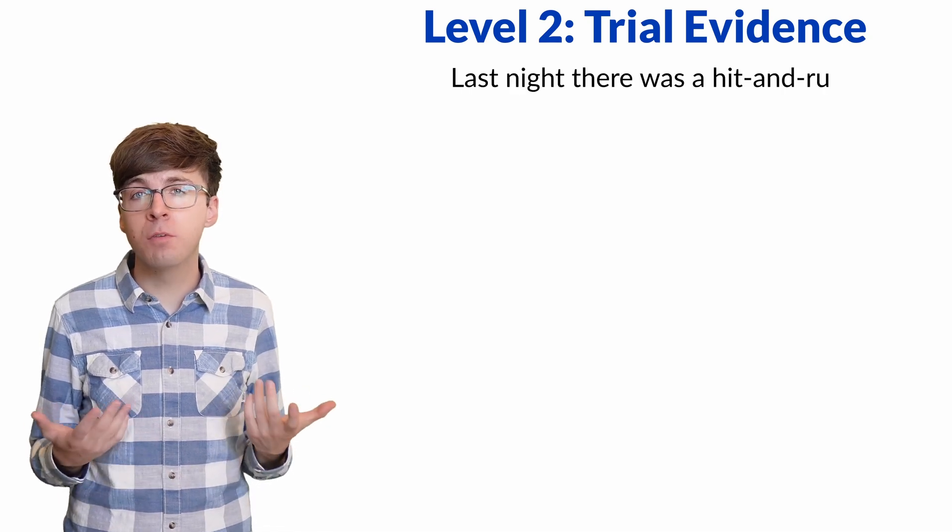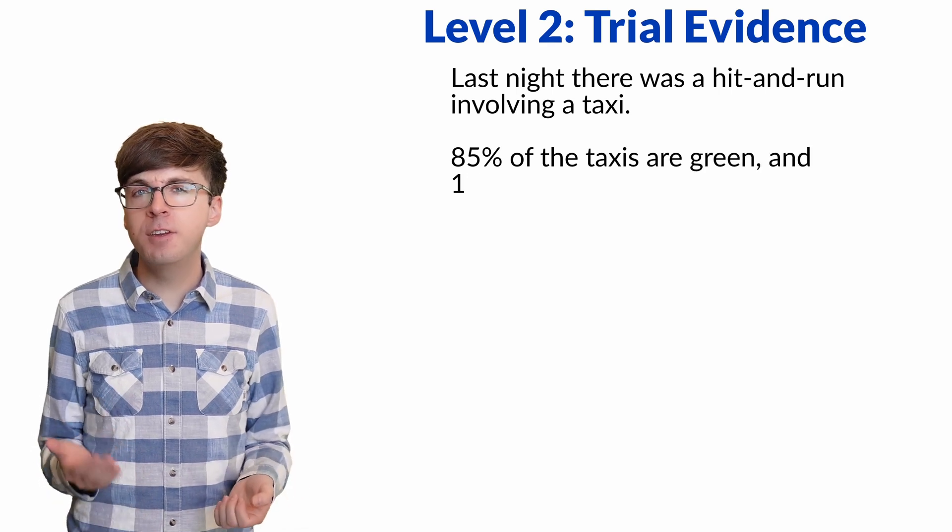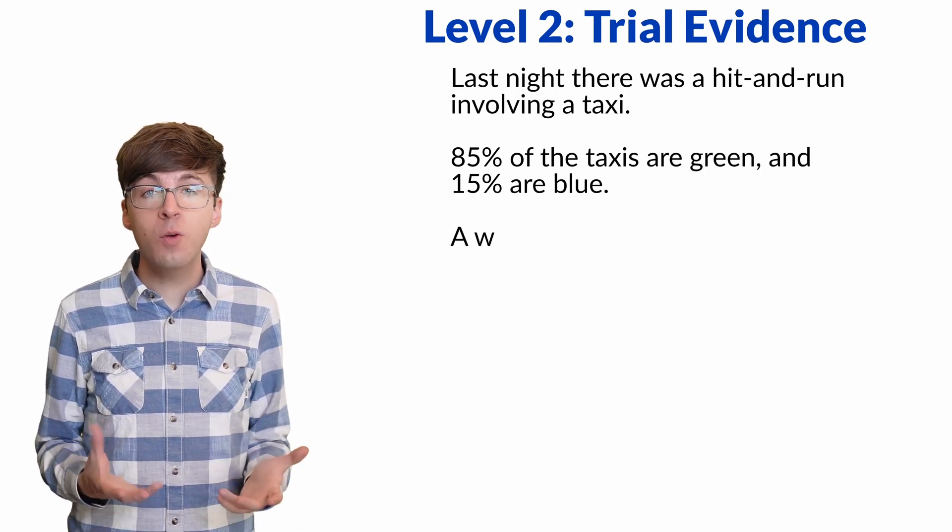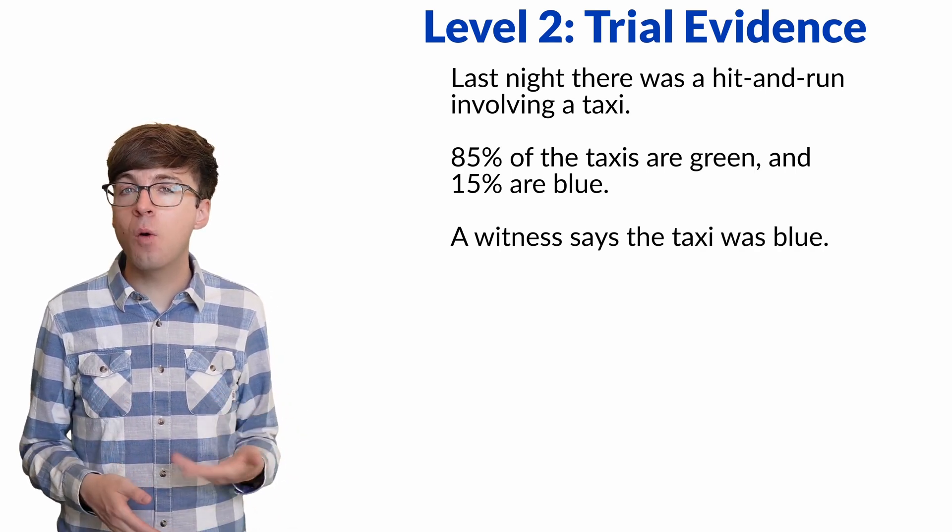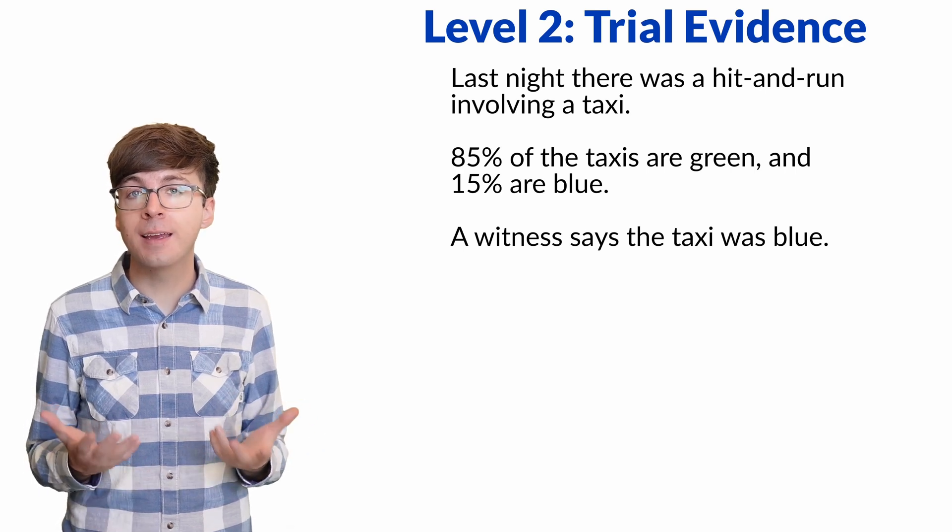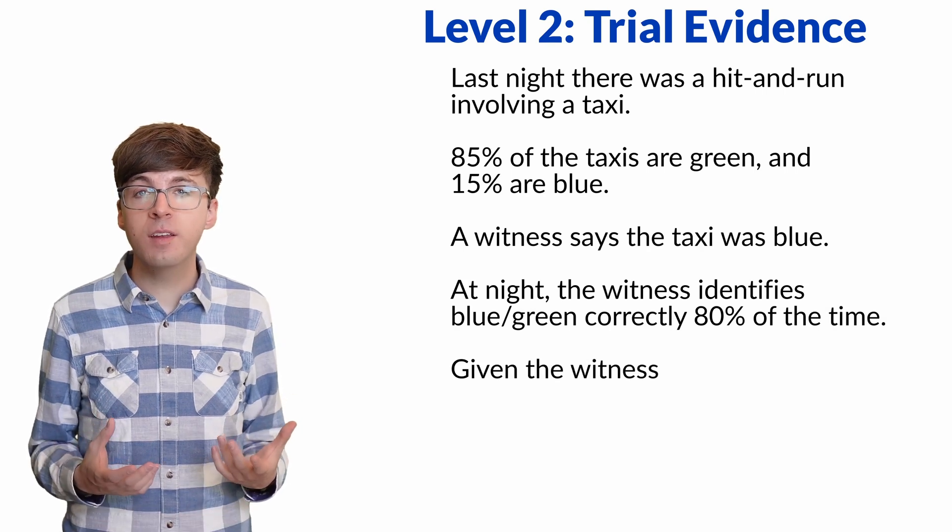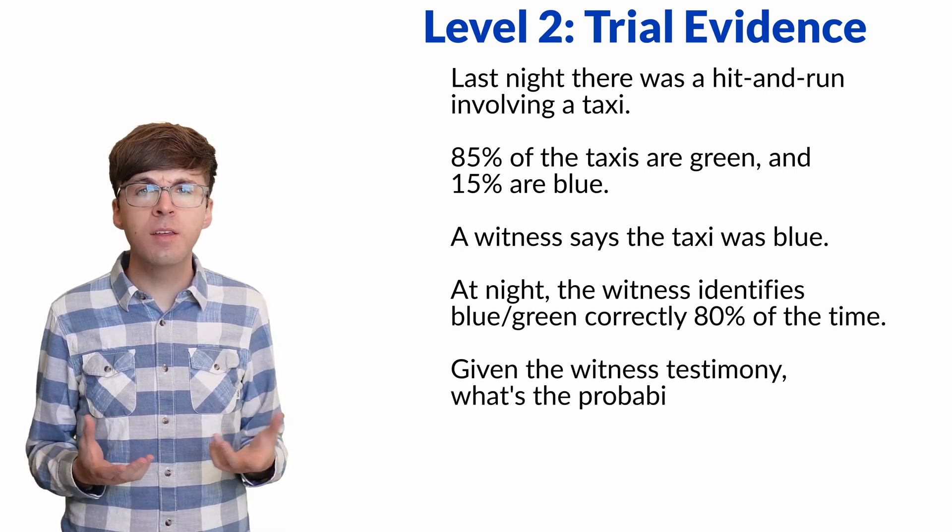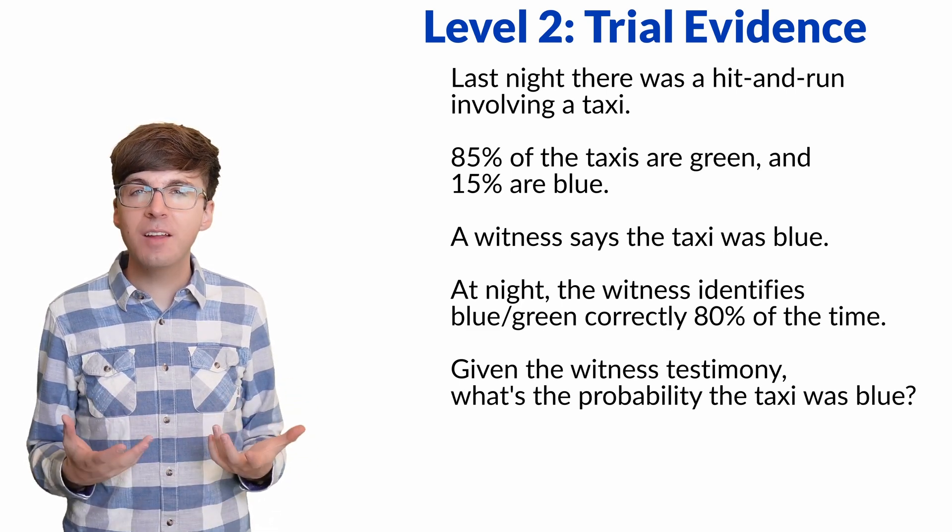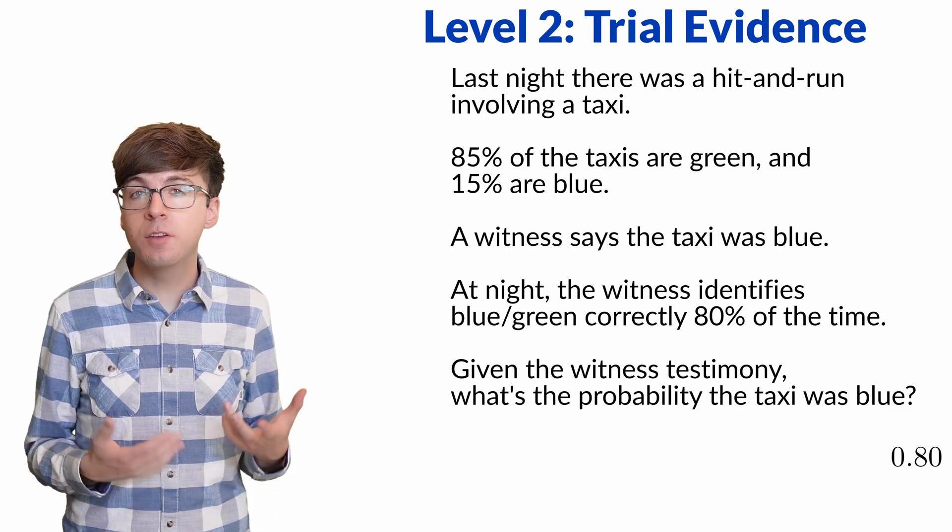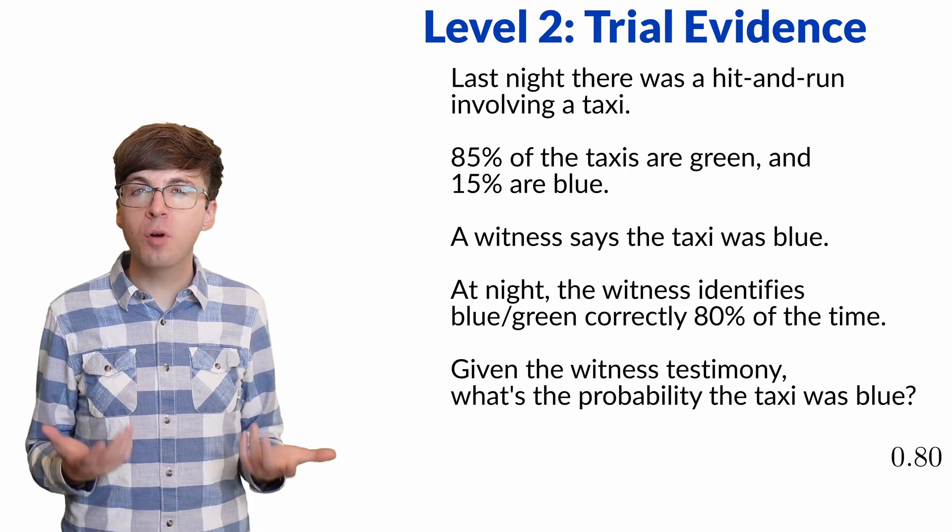Last night, there was a hit and run involving a taxi. In that city, 85% of the taxis are green and 15% are blue. An eyewitness says the taxi was blue. However, the witness was tested to see how often they correctly identified blue and green at night, and they were correct only 80% of the time. Given the eyewitness testimony, what's the probability that the taxi involved was blue? This is Kahneman's taxi cab problem. A tempting answer might be 80%, since the eyewitness correctly identifies the colors at night 80% of the time. But this is the wrong probability.